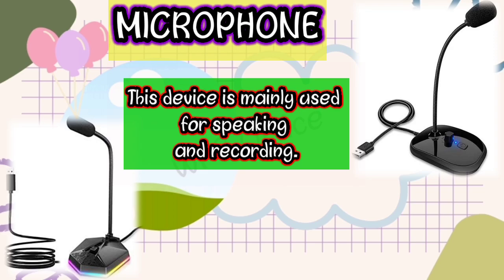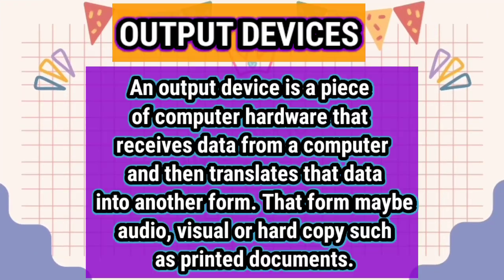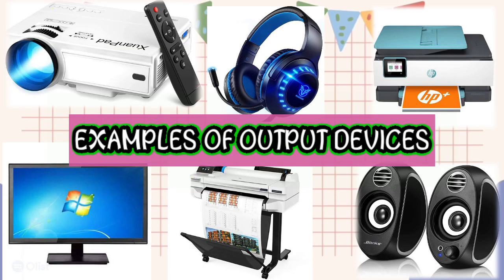Now let's move to output devices. An output device is a piece of computer hardware that receives data from a computer and translates that data into another form. That form may be audio, visual, or hard copy such as printed documents. An output device is just the opposite of an input device.